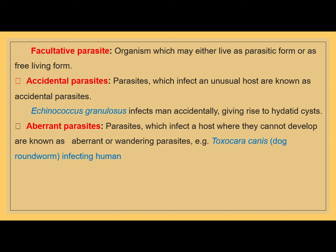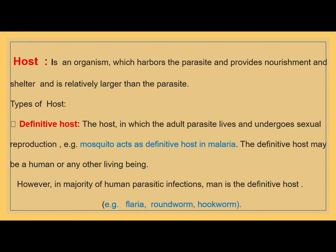Another type of parasite is facultative — an organism which may live as a parasitic form or free-living. Accidental parasites are those which infect an unusual host. For example, Echinococcus granulosus infects man accidentally, whereas it is a parasite of dogs. Another type is aberrant, which you may call wandering parasites. An example is Toxocara canis, a dog worm, which can also infect human beings.